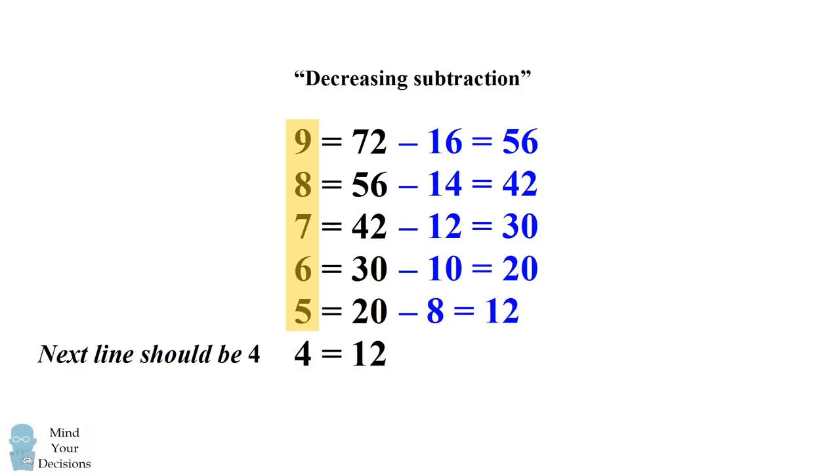So then how do we figure out what the next line is? How do we get to what 3 equals? Well we look at the numbers we're subtracting by. If we have this logic of decreasing subtraction we should subtract by 2 less than 8. So that means the next line would have 12 minus 6. And that would give us the answer on the right hand side of the next line which equals 6. So if we decrease 4 we then have the next line being 3. And then we have the answer of 6 by this decreasing subtraction method.